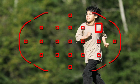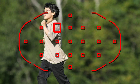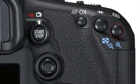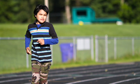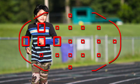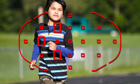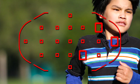In AI Servo AF, automatic AF point selection no longer has to start in the center. Just press the AF point selector button on the back of the camera and dial in any AF point you like to begin tracking your subject. As long as you're in automatic AF point selection, if the subject moves away from your starting point, the viewfinder will indicate the updated AF point being used to track your subject.